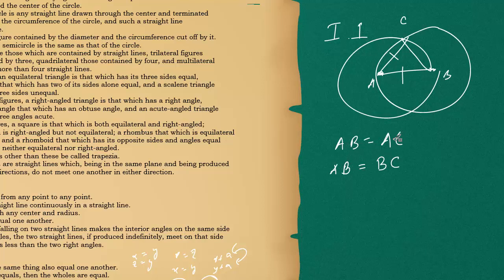Two things equal to the same thing must be equal to each other. With AC equals AB and BC equals AB, we apply Axiom 1. So AC must be equal to BC. That means all three sides are equal — it's an equilateral triangle. It's pretty cool. That's how he did it.